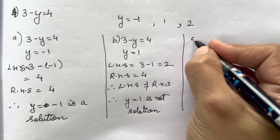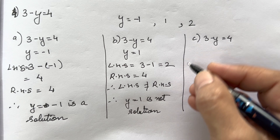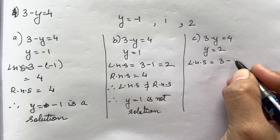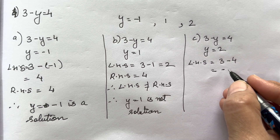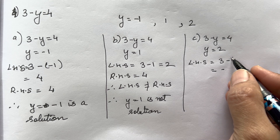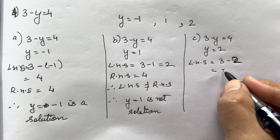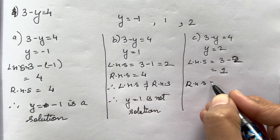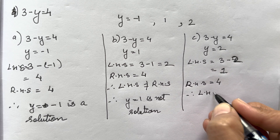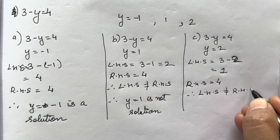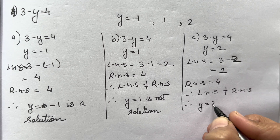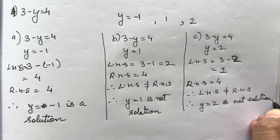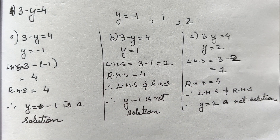Next: 3 - y = 4 with y = 2. Left Hand Side is 3 - 2 = 1. Right Hand Side is 4. Again both sides are not equal, so y = 2 is not a solution. I hope this exercise is clear to everyone. See you in the next video — till then, take care, bye!